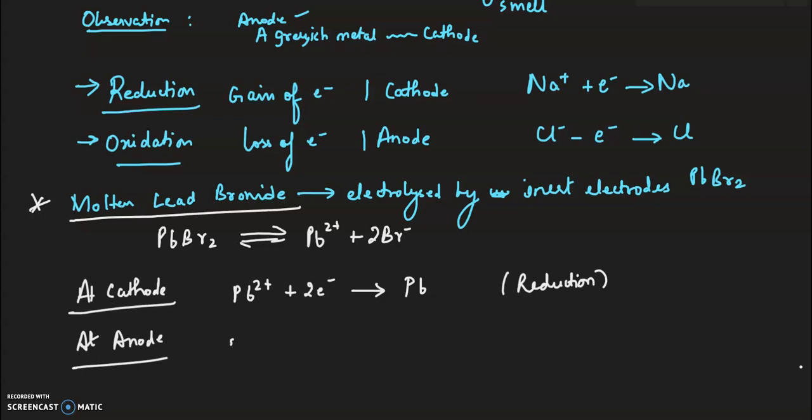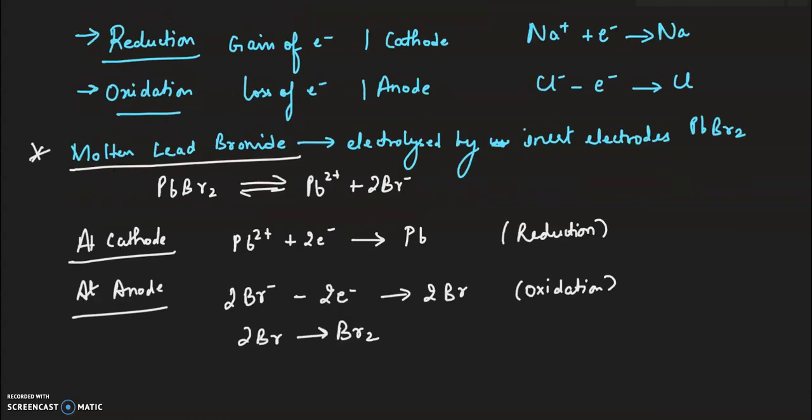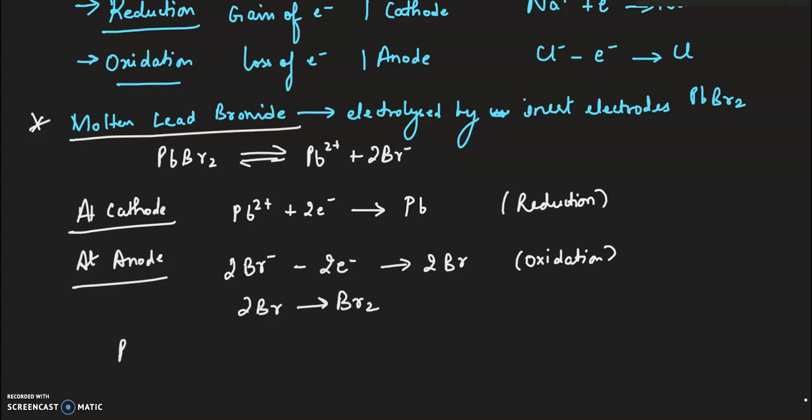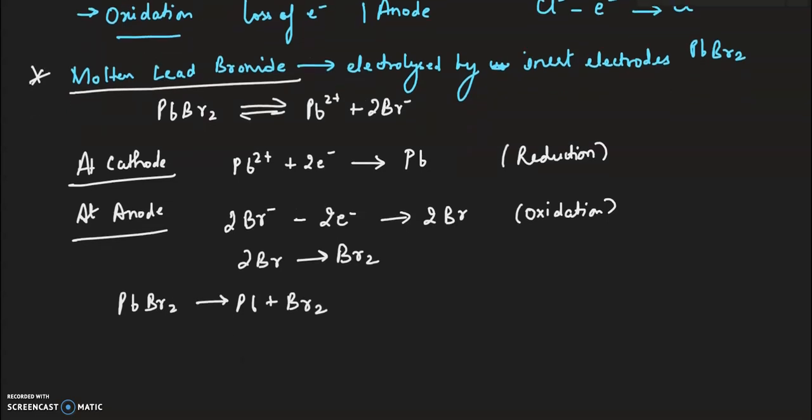At anode, we have 2Br-, we have to take 2 electrons. It will form 2Br. This is oxidation. 2Br will be converted into Br2. Then PbBr2 gives Pb plus Br2. Grayish metal is deposited at cathode, and reddish brown gas is evolved at anode.